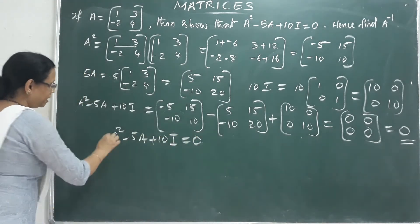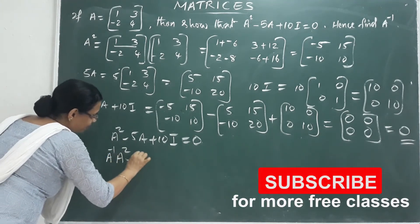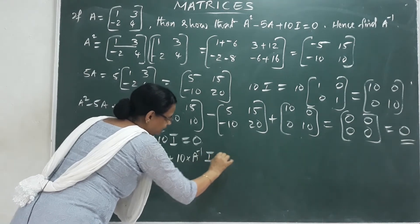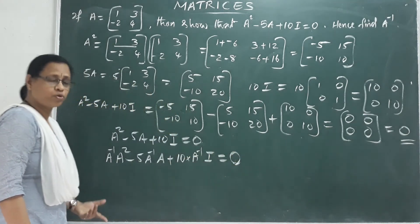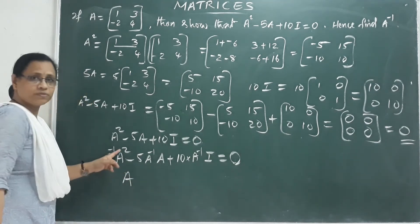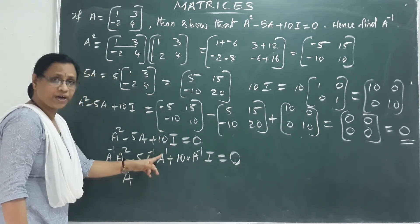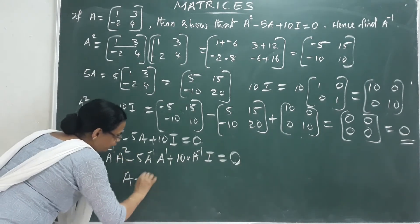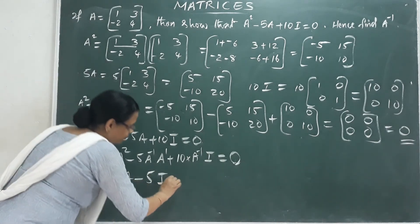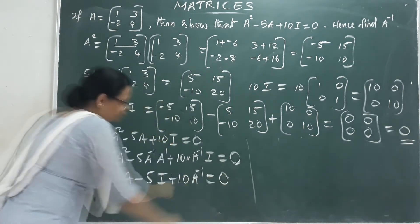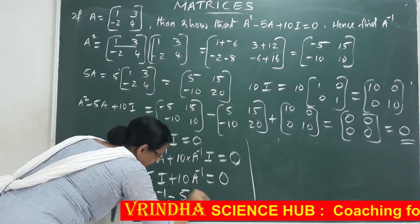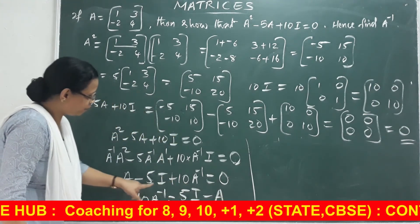Hence, find A inverse. From the polynomial A squared minus 5A plus 10I equals 0, multiply both sides by A inverse. Then A minus 5I plus 10A inverse equals 0, which means 10A inverse equals 5I minus A.